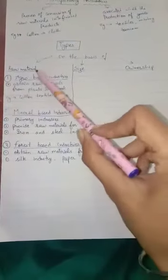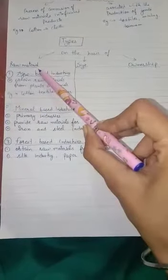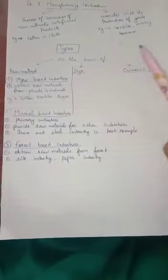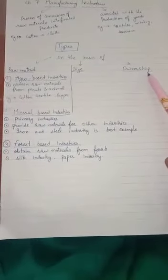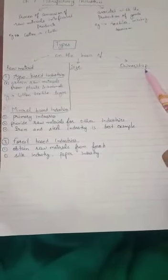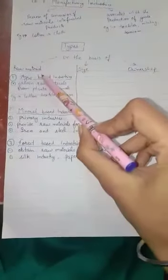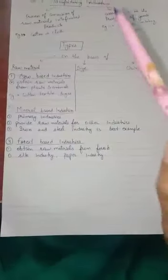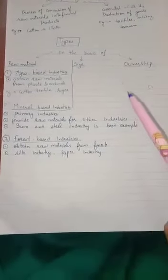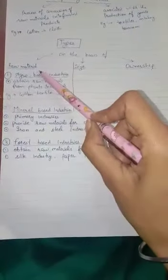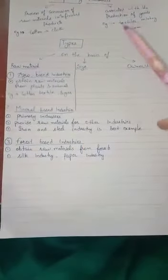Now let us see some types of manufacturing industries. Manufacturing industries can be classified on the basis of raw material used, size, as well as on the basis of ownership. Let us first look at classification based on raw material.